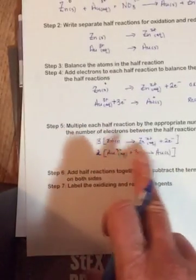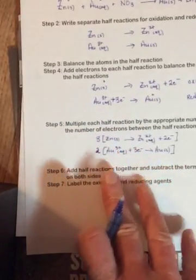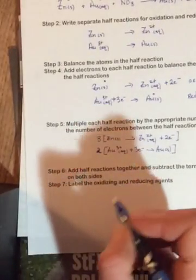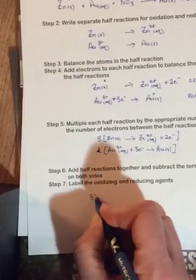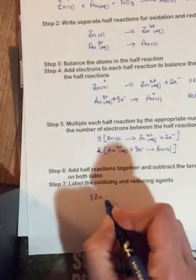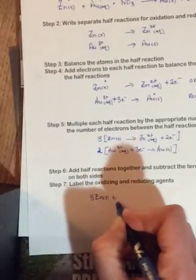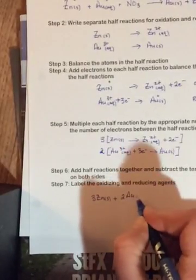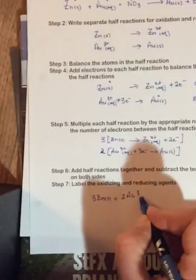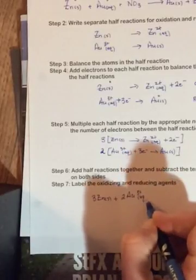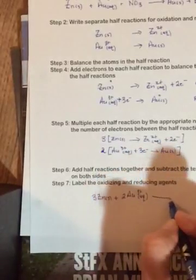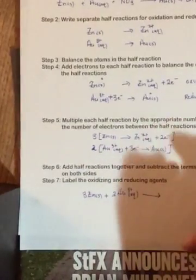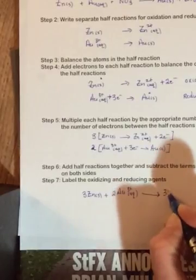And if there were any other things that were common, we could cancel those out too. And then label the oxidizing and reducing agent. So we'll have three zinc solid plus two Au three positive aqueous—I'm canceling the electrons without adding them in—and then that's going to go to three zinc two positive aqueous plus two Au solid.